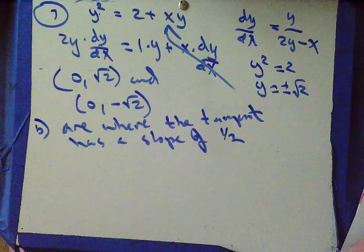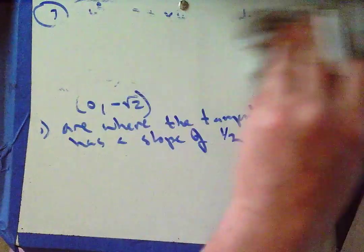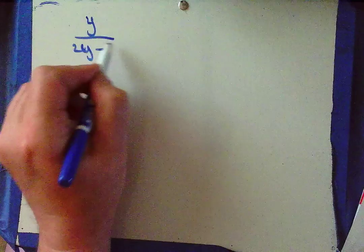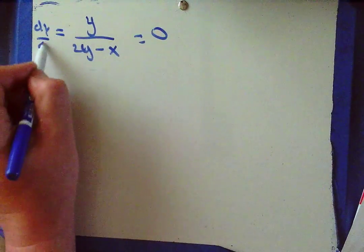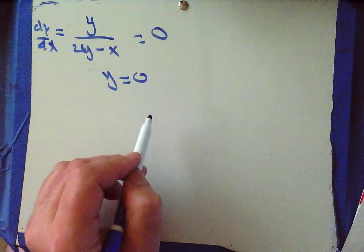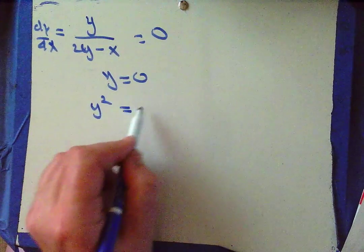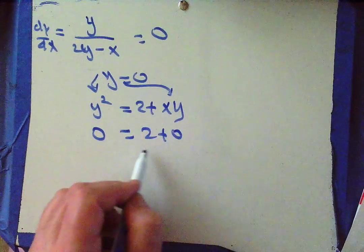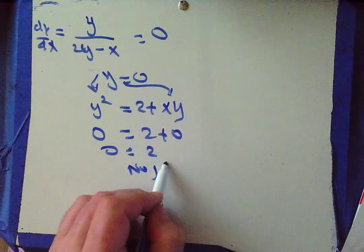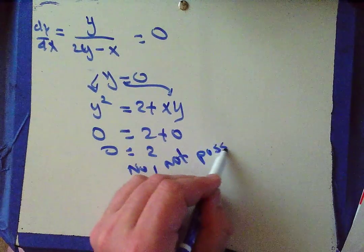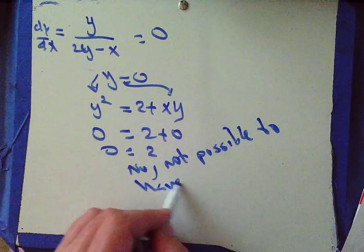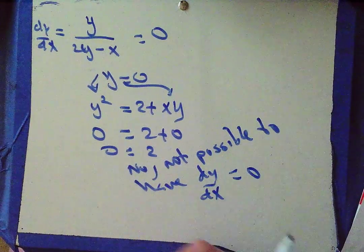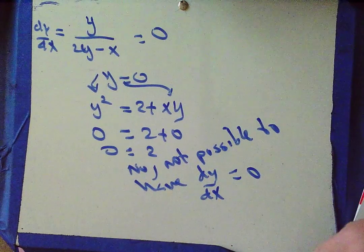Part c: show that there are no points where the tangent line is horizontal. If the tangent line were horizontal, the numerator y would have to equal 0. Substituting y equals 0 into the original equation: 0 equals 2 plus 0. But 0 does not equal 2, so it is not possible to have dy/dx equal to 0 on this curve.